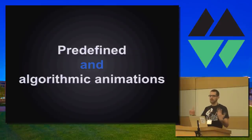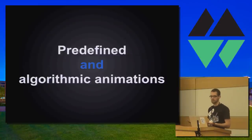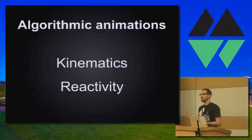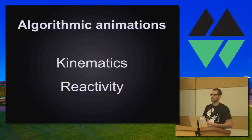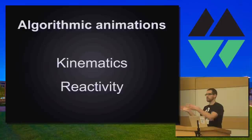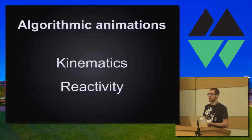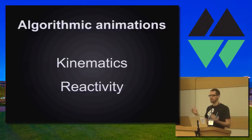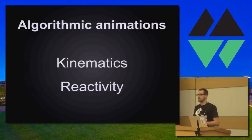There are predefined and algorithmic animations. Algorithmic animations deal with not knowing what the next frame of the animation is going to be — it can be unpredictable. Every frame just takes a bunch of input variables and renders those to the screen, and you don't necessarily know what those input variables are going to be, because they could come from user input, network activity, or any number of things. Examples include kinematics, physics, and responding to a simulated environment.